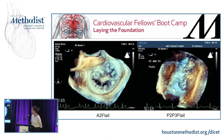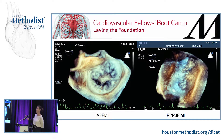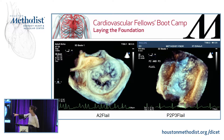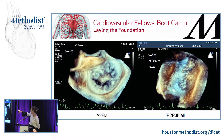The A2 flail is pretty easy to see right here. It's hard to see when it's moving, so you've got to stop it at the right spot — slow it down on your echo machine. I stopped it and said, okay, it's an A2 flail. The chordae are pointing toward the posterior leaflet. This is a P2 and P3 flail — the chordae are pointing toward the anterior leaflet.